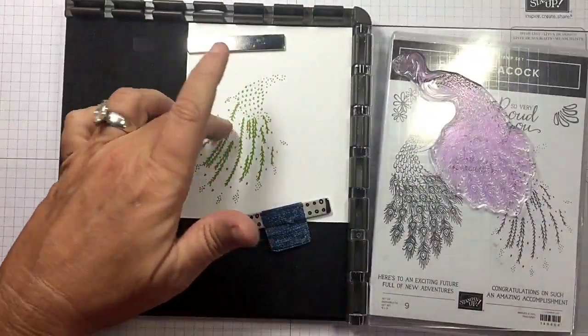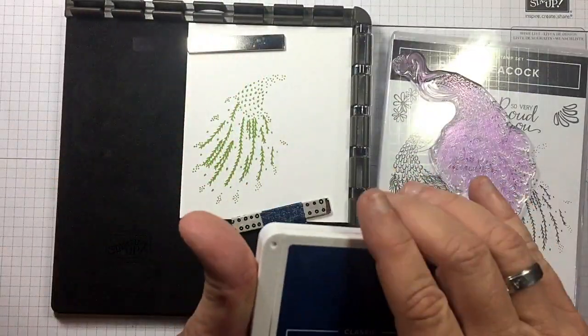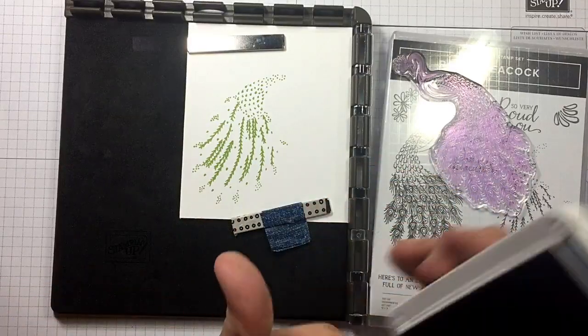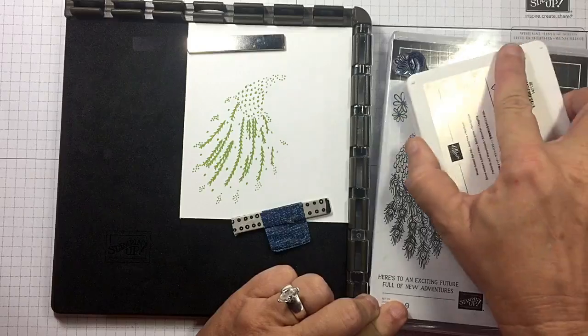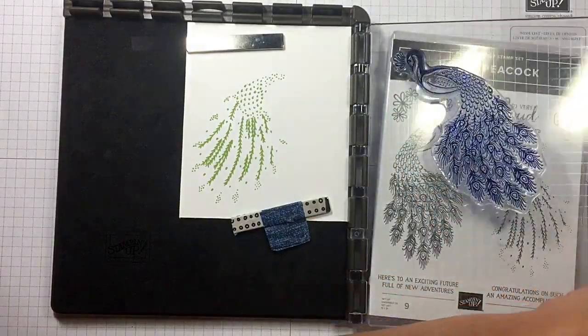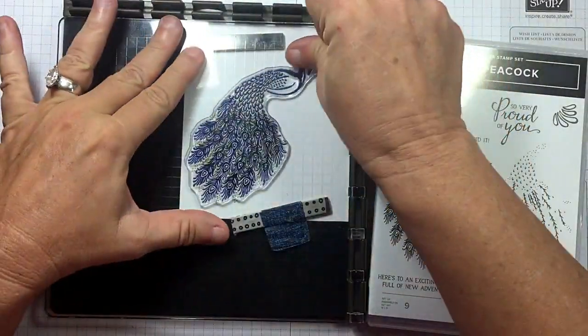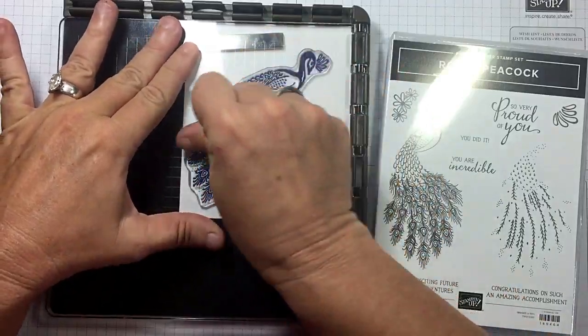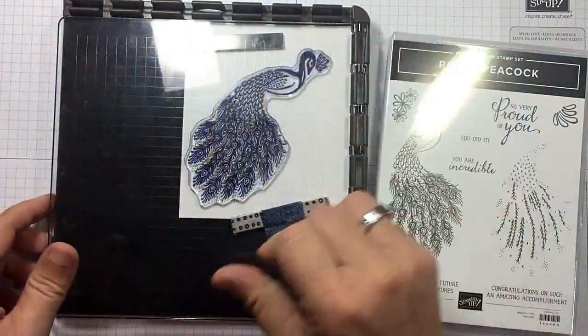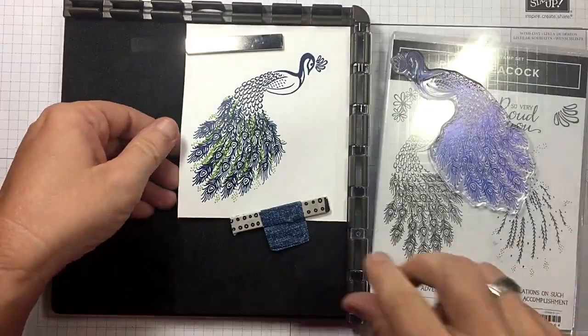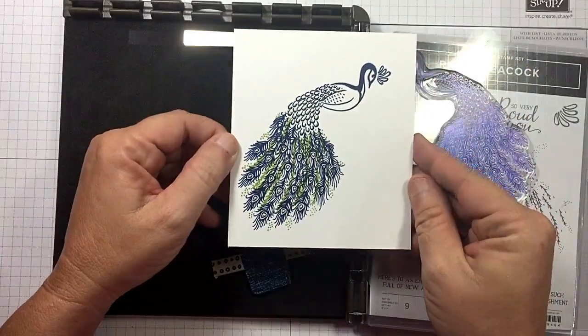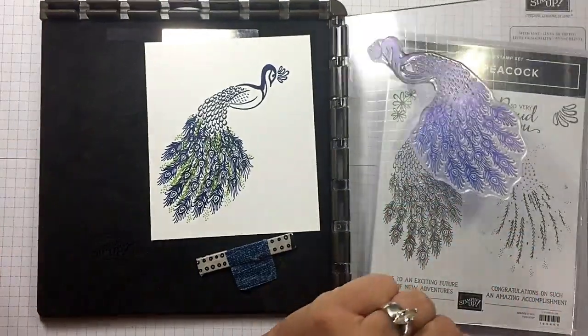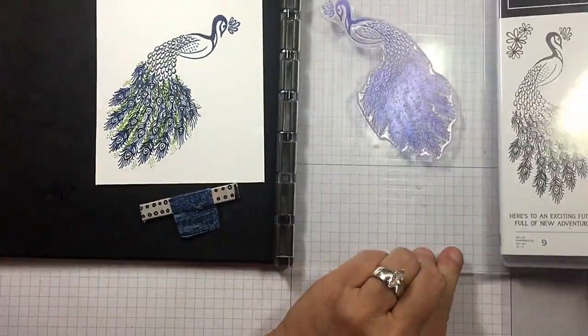So let's bring in our Blueberry Bushel. Get this gorgeous bird nice and inked up, a little massage. And there you go, how gorgeous is that! Love, love, love it. So that is how you line up your peacock.